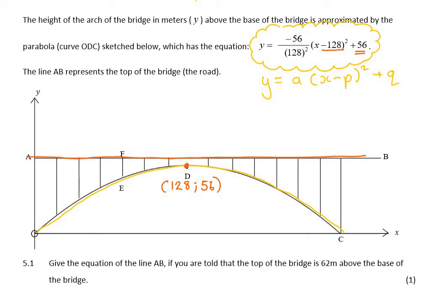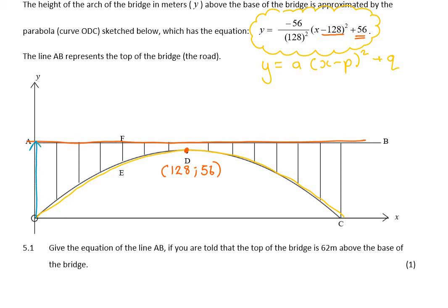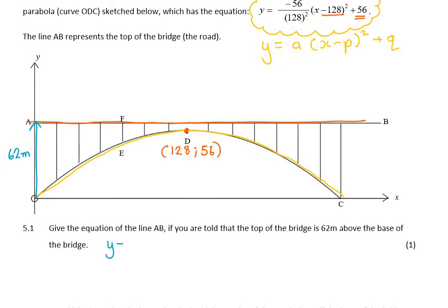It says give the equation of the line AB if you're told that the top of the bridge is 62 meters above the base of the bridge. Now they're telling you that the top of the bridge is 62 meters above the base. So this isn't meant to be a trick question. This literally just means the line AB will be y equals 62, because here's the base of the bridge and the top is 62 meters. So this A is at 62.